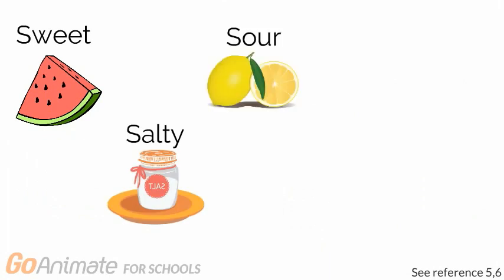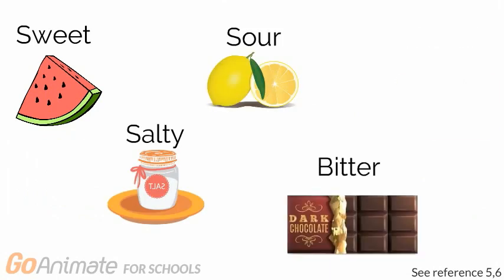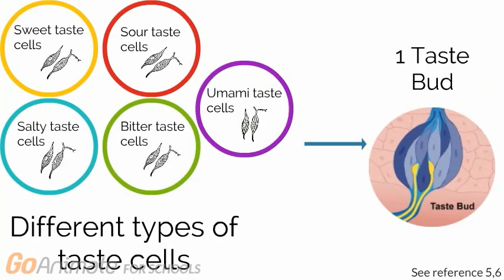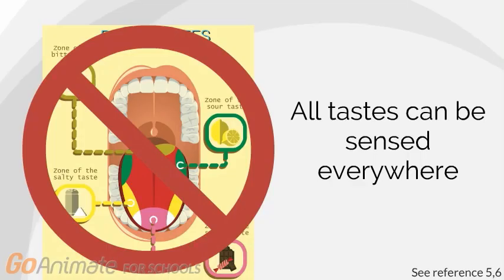Each taste bud contains a hundred taste cells that recognize chemicals in food. Each taste cell can recognize a specific type of taste. Since there are many taste cells within taste buds and taste buds exist all over the tongue, you can recognize all the tastes all over your tongue.